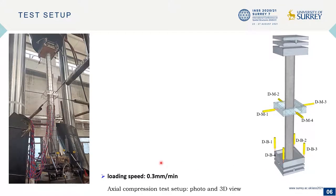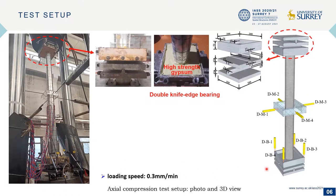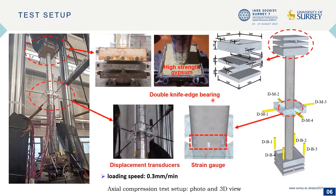The test setup is plotted here. Two double knife-edge bearings were employed because there is no distinction between strong and weak axis for circular tube members. Four displacement transducers and eight strain gauges were used to measure the mid-span deflection and surface strain. The loading speed was set at 0.3 millimeters per minute.